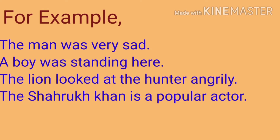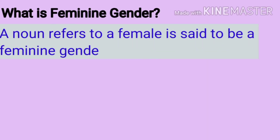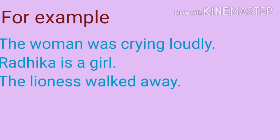So, in the above examples, man, boy, and lion are in masculine gender. Now let's understand what is feminine gender. A noun that refers to a female is said to be in feminine gender. For example: a woman was crying loudly, Radhika is a girl, the lioness walked away. In the above examples, woman, girl, and lioness are in feminine gender.